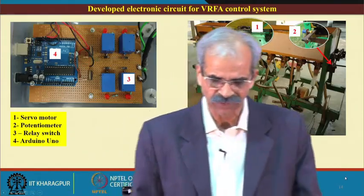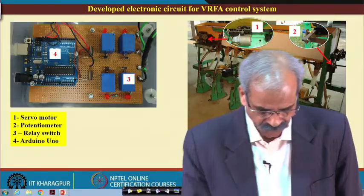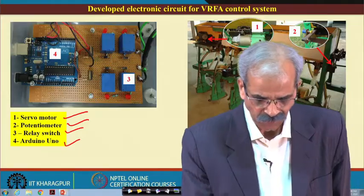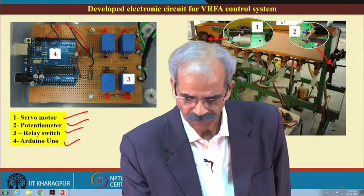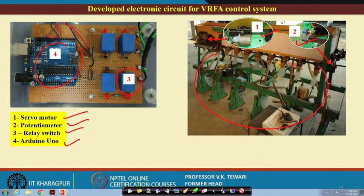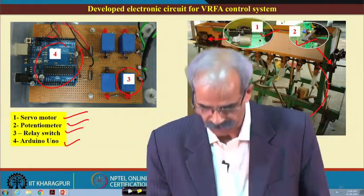The developed electronic circuit shows the servo motor, potentiometer, relay switch, and ordinary unit. One is the servo motor, two is the potentiometer, three is the relay switch, and four is the ordinary unit. We are in a position to show you this unit, which has been developed and operated in the field, giving results very close to our acceptability standards.